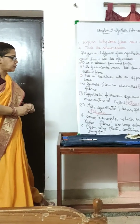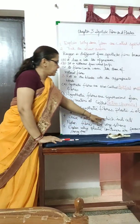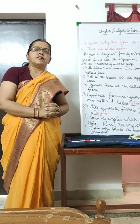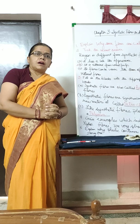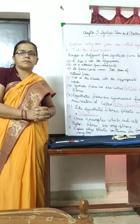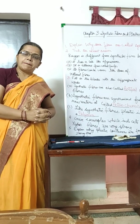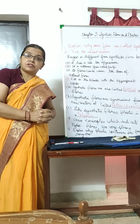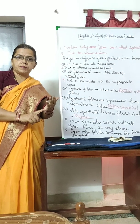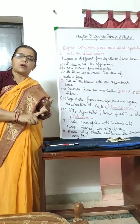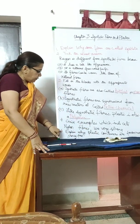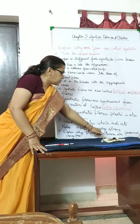Question four: Give examples which indicate nylon fibers are very strong. Nylon was the first artificially prepared synthetic fiber and finds many uses in making socks and ropes. It is stronger than steel and is used for making parachutes, parachute ropes, and in rock climbing — that is why nylon is very strong.